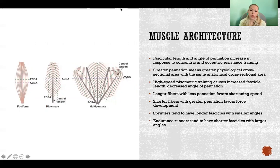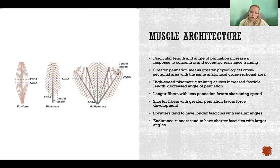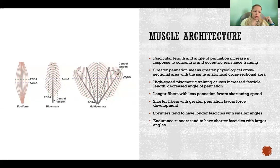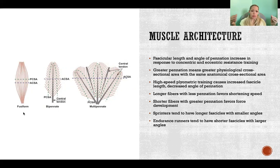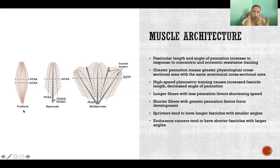Muscle architecture also changes in response to strength training. The fascicular length and angle of pennation both increase in response to concentric and eccentric resistance training. Greater pennation means greater physiological cross-sectional area with the same anatomical cross-sectional area. Pennation is the angle of the muscle fibers relative to the axis of force generation. Looking at a fusiform muscle, the axis of force generation runs from one tendon to the other — the direction that force will be applied to the bone when the muscle shortens. If the fibers run in the same direction as the axis, it's not a pennate muscle — there's no angle of pennation.